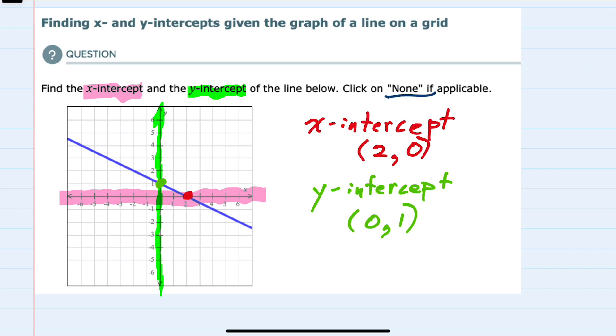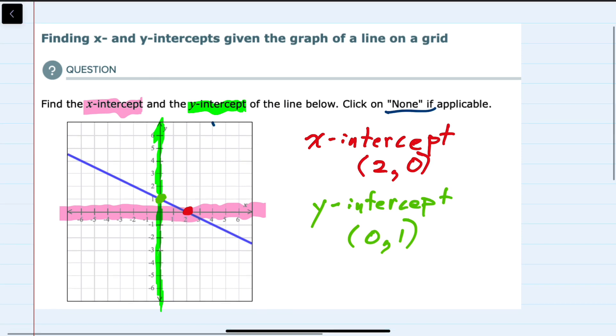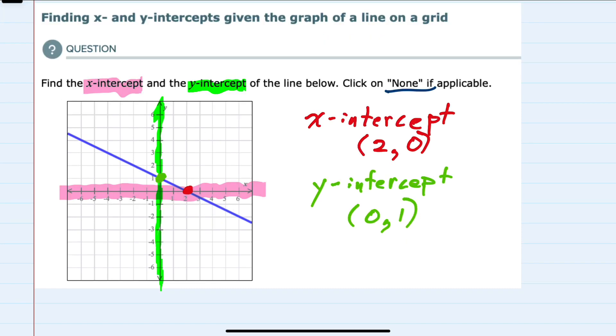And while we didn't have it here, the option of none could have come about if we had either a horizontal line that would not have crossed the x-axis, so the x-intercept would have been none. Or we could have had a vertical line that would not have had a y-intercept, because it wouldn't have crossed the y-axis. So in that case, the y-intercept would have been none. However, this example had neither of those, so we were able to find both the x- and y-intercepts.